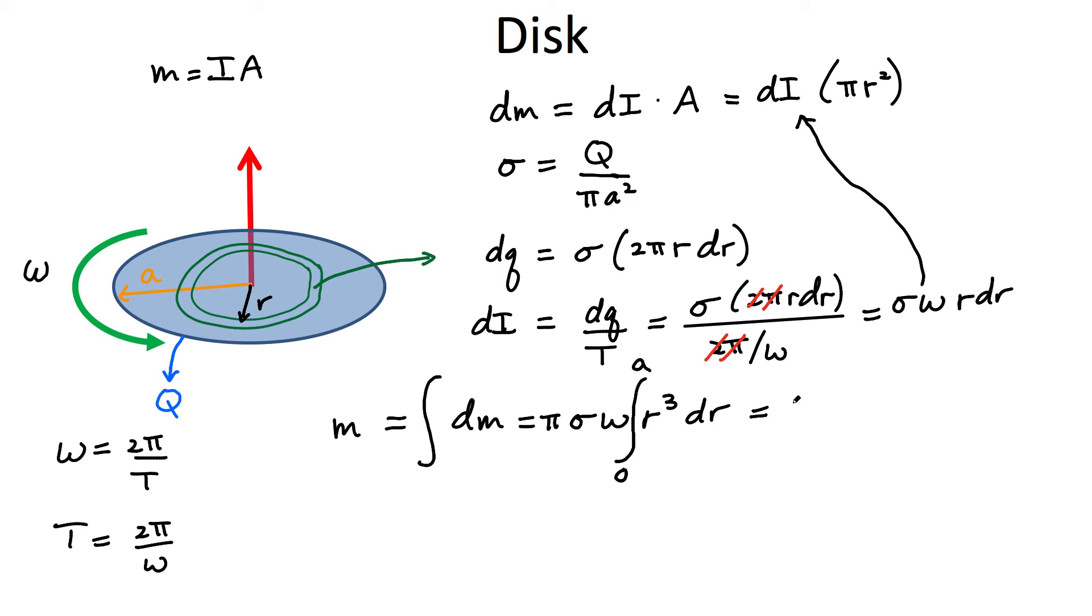Alright, this is very easy to evaluate this integral. It's simply pi sigma omega. And I'm left with r to the fourth divided by four. And that's evaluated between the limits of zero and a. Alright, so my final expression, pi sigma omega over four, and this is a to the fourth power.